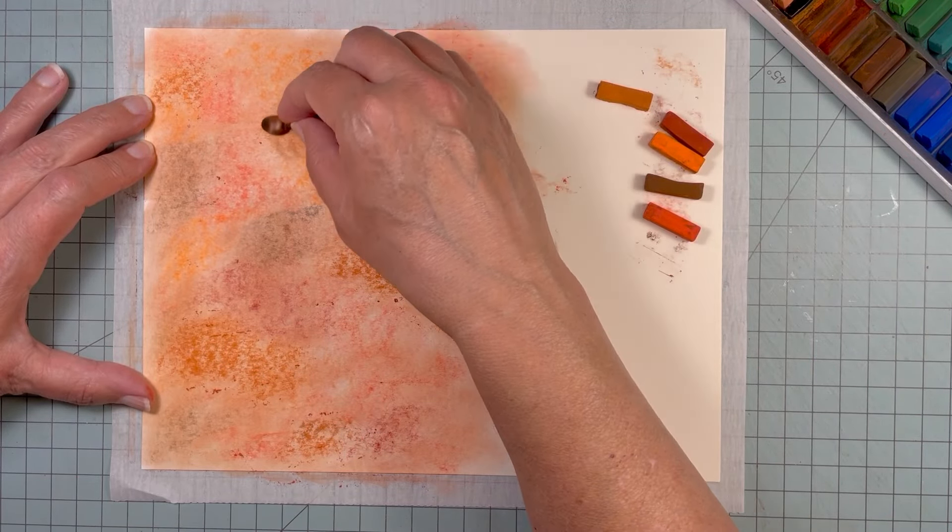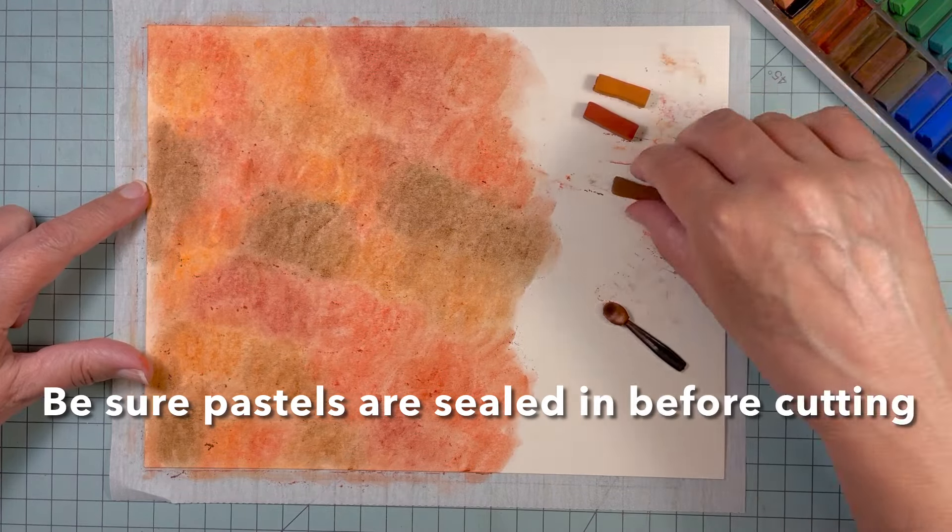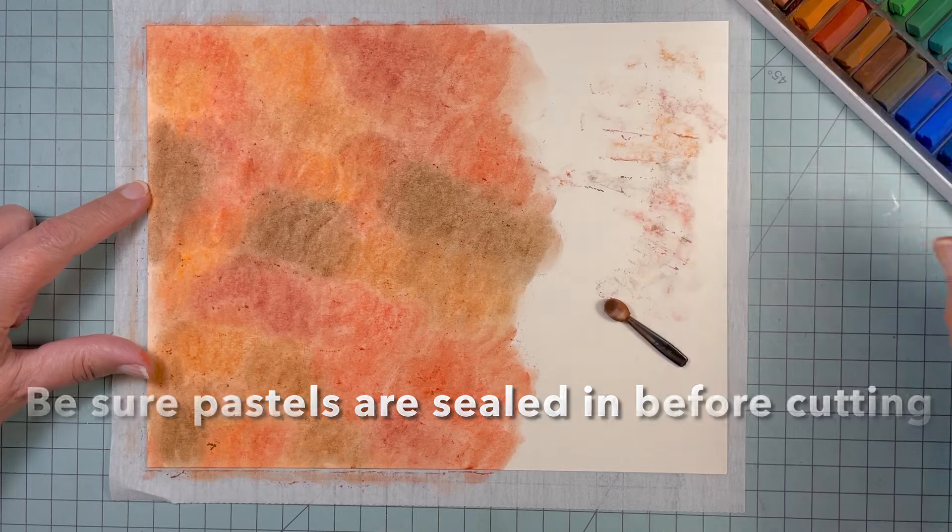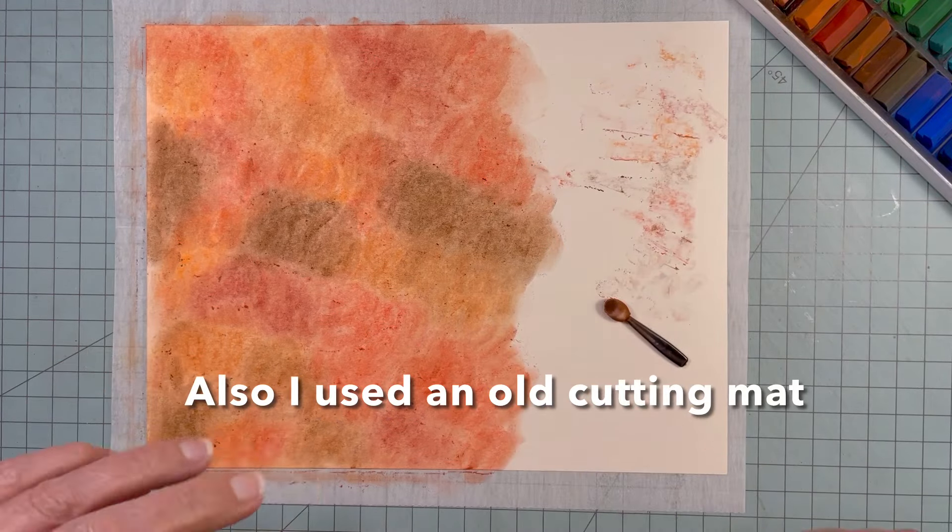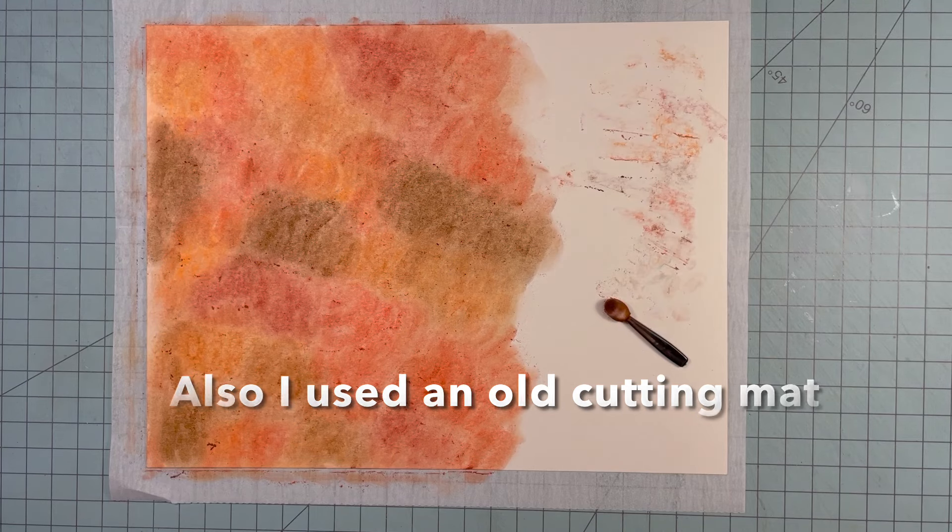Once I have the color just the way I want it, I'm going to brush off into the trash all of the dust if there is any from the chalk pastels. And then I'm going to spray it with hairspray because that will help set the color. Make sure it's dry and then cut it with my cutting machine.